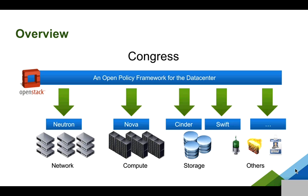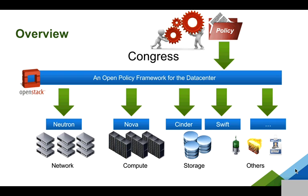The first input you give it is the collection of services other than Congress that are running in the data center — all the standard OpenStack services you're familiar with: Nova, Neutron, Cinder, Swift. These other services describe to Congress the actual state of the data center. The second input that you give to Congress is the policy, which describes how that data center ought to behave. So you've given Congress two inputs: the policy that says what should happen, and the collection of services Congress can use to understand what actually is happening.